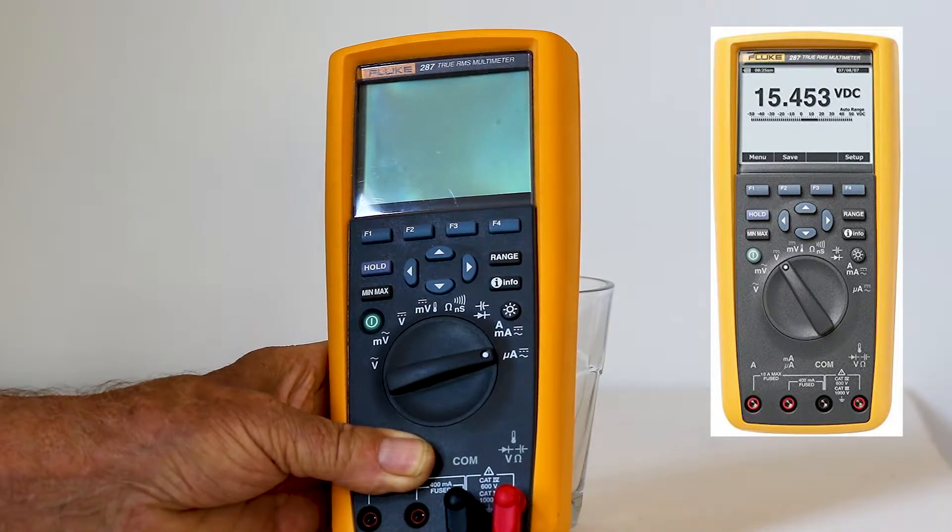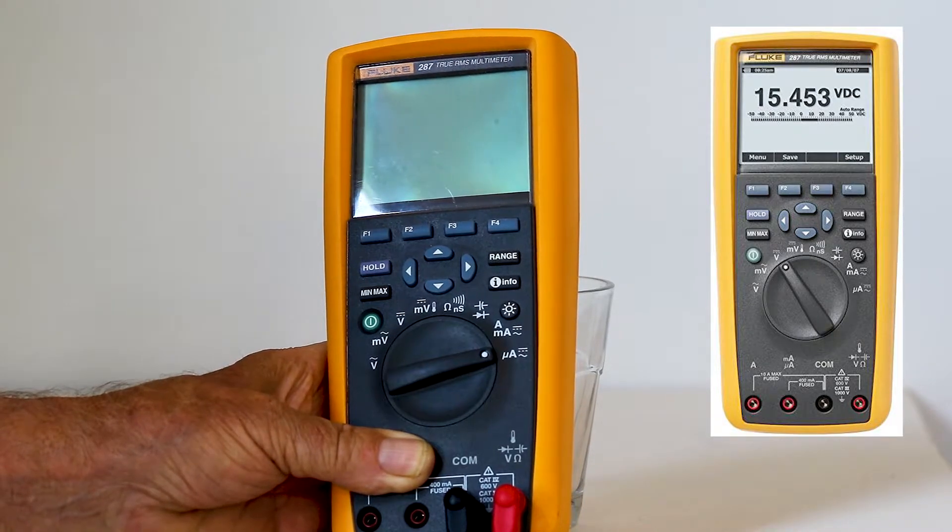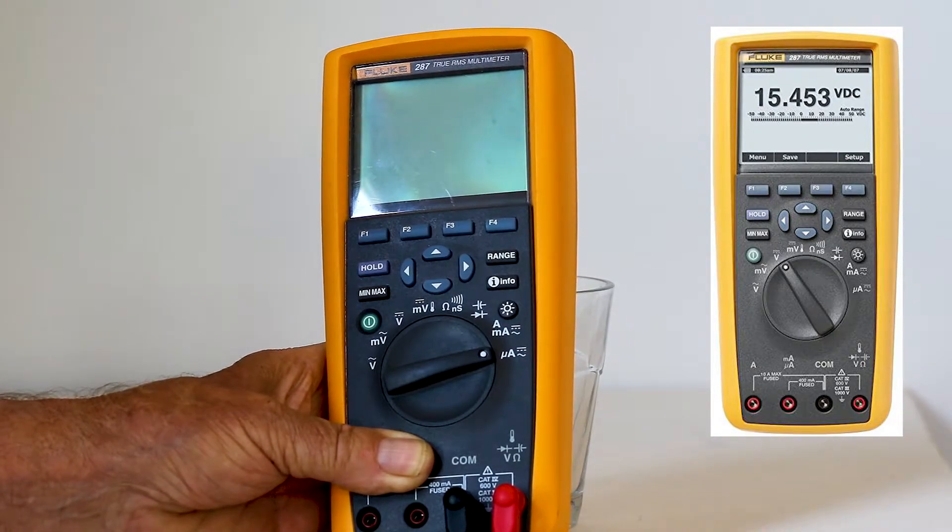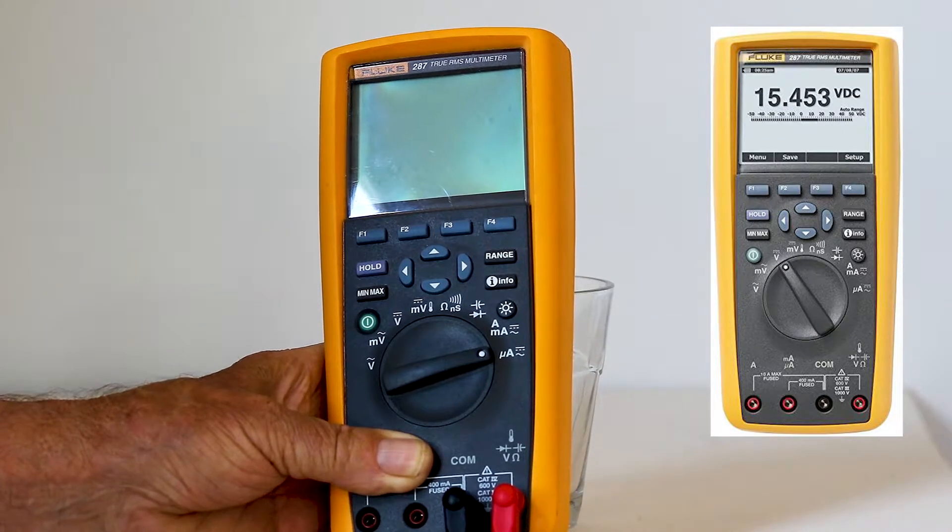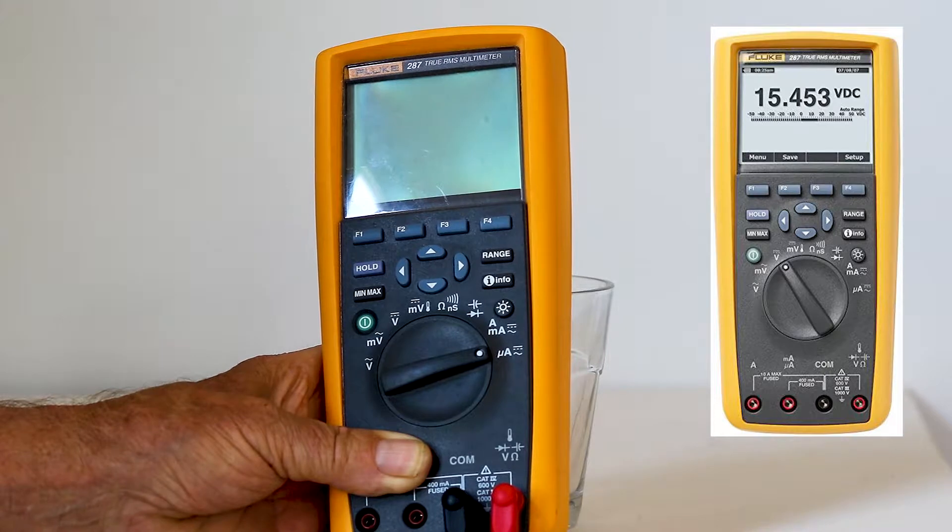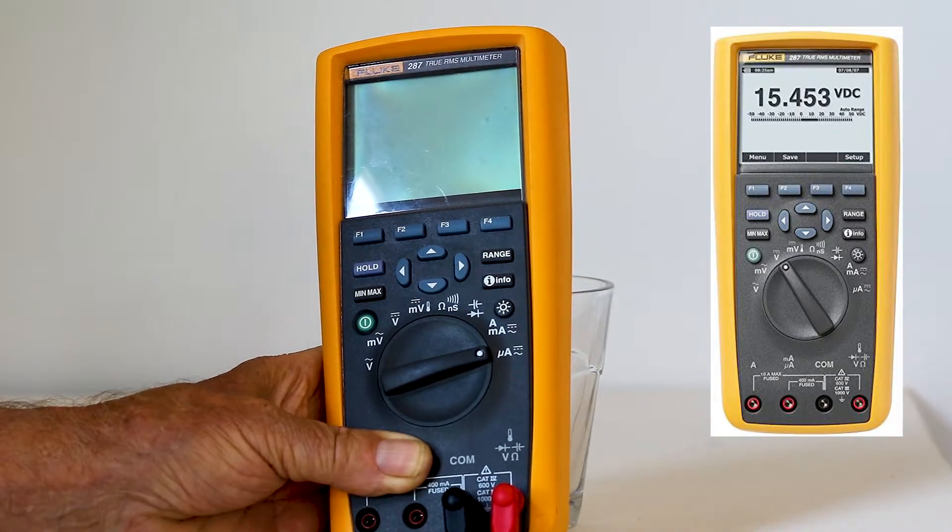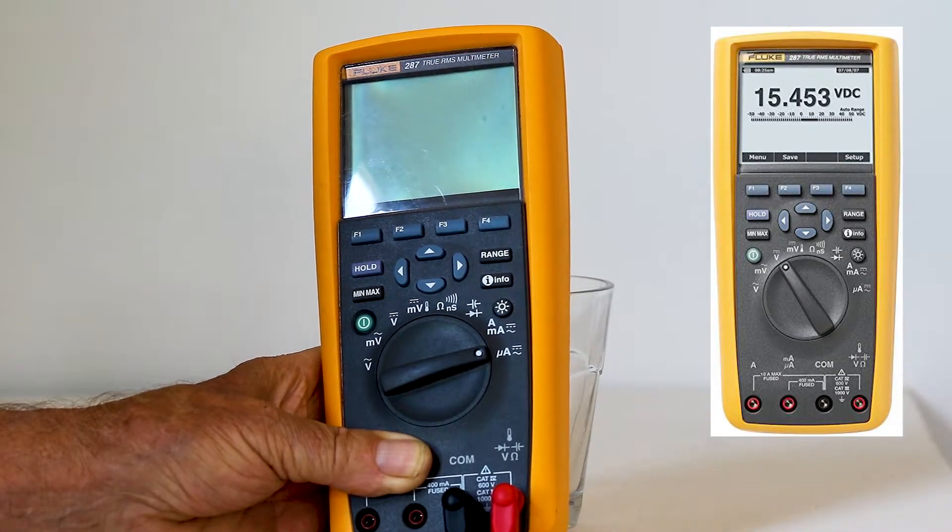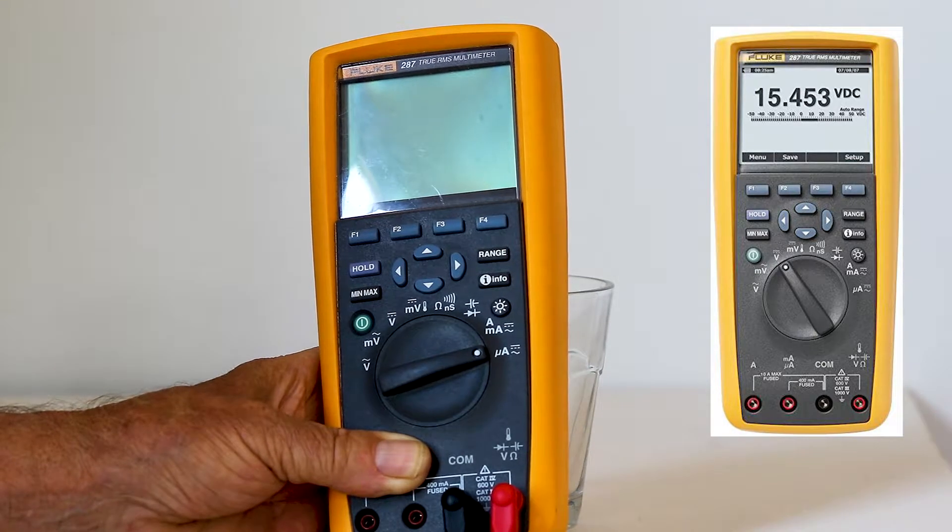The Fluke 287 multimeter also measures current with 400 milliamp and 10 amp fused inputs. It also measures resistance up to 500 megaohms and has a very melodic continuity beeper. Additionally, the meter does frequency readings and capacitance and diode checks.